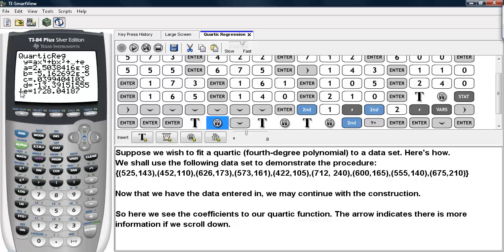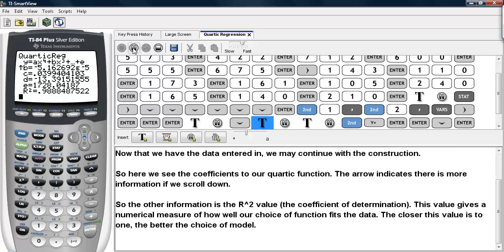This arrow indicates that there's more information to see. So we'll go ahead and press down, and we see the R squared value. The R squared value is the coefficient of determination. And this is a numerical measure of how well our choice of function fits the data. The closer this value is to 1, the better the choice of the model.